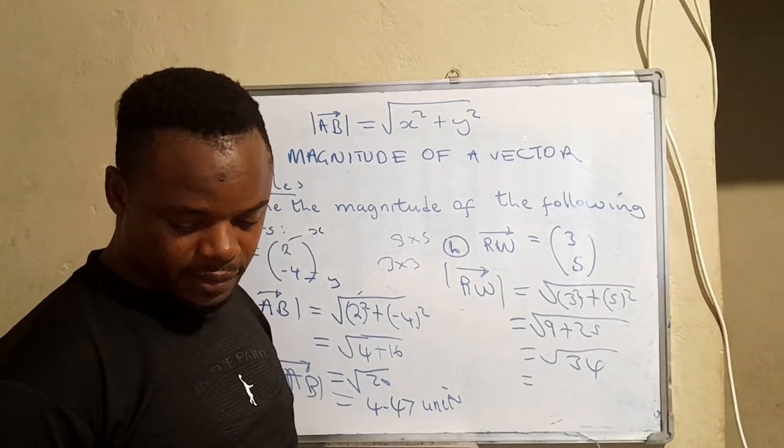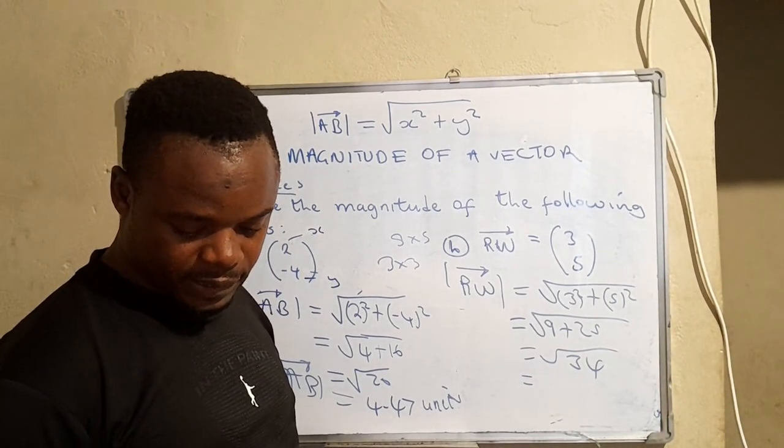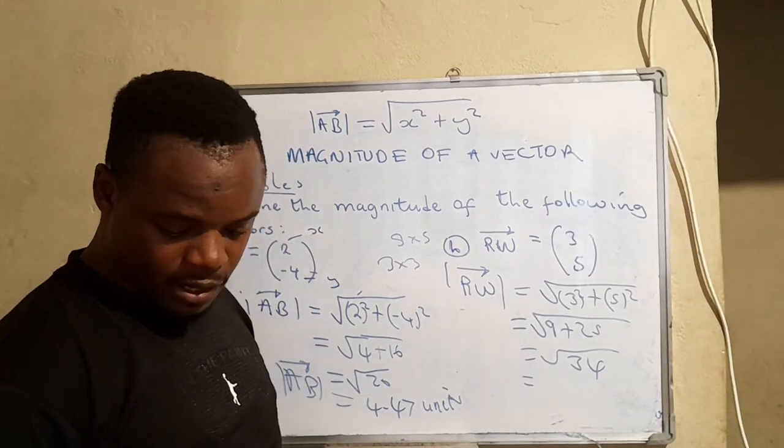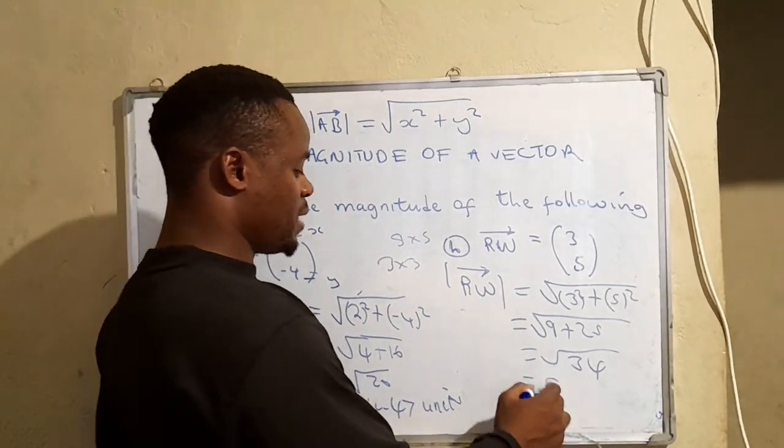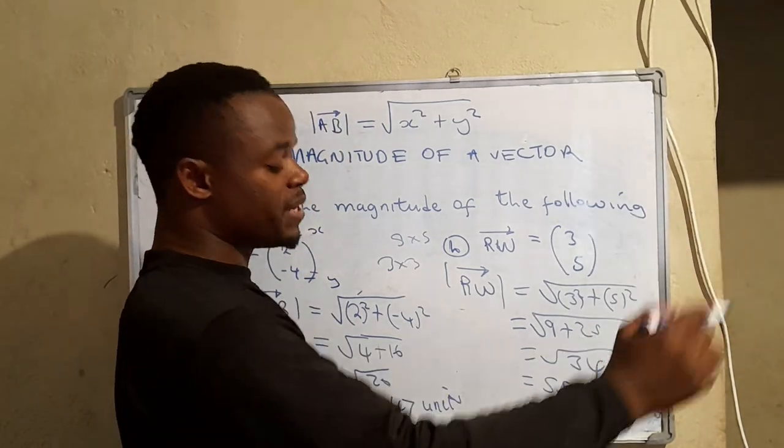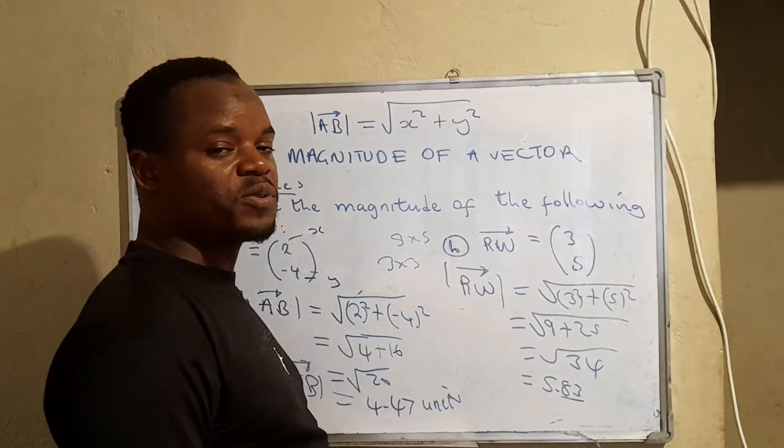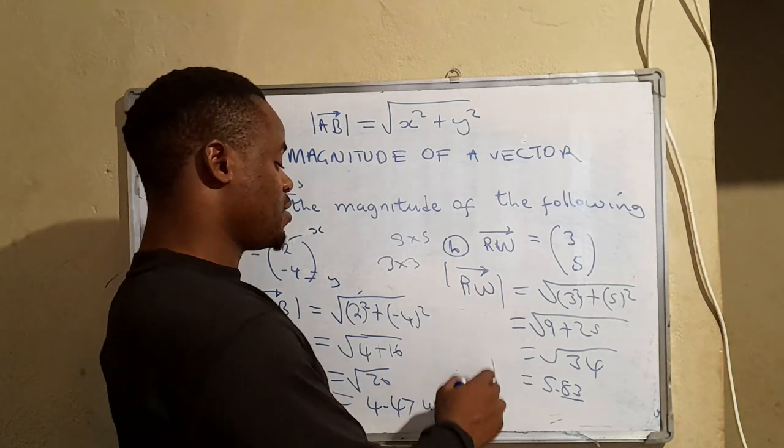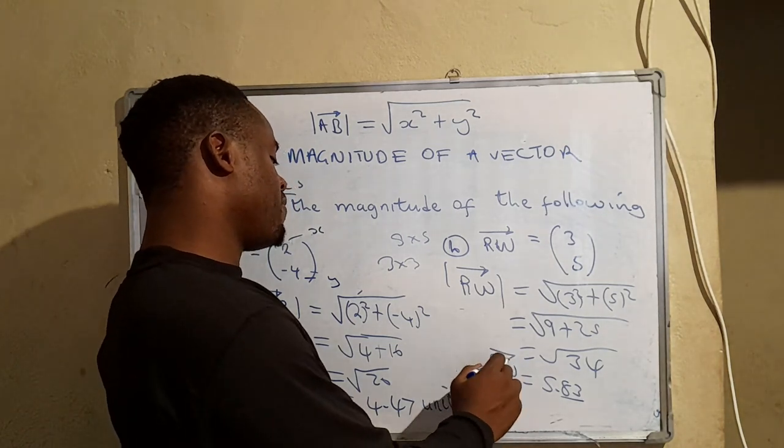So the square root of that one will be 5.83, but we need to round it off to two decimal places. So we have actually found the magnitude of vector RW.